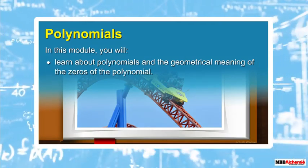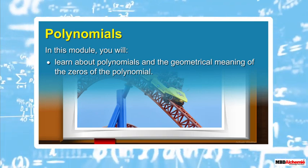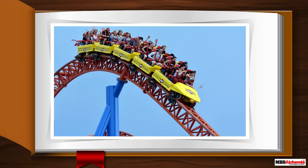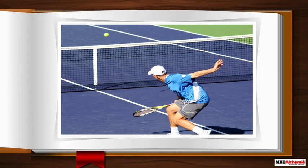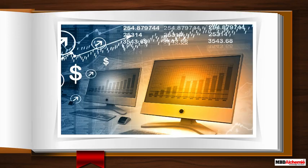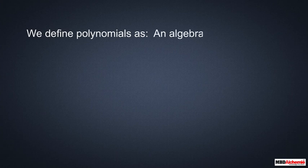In this module, you will learn about polynomials and the geometrical meaning of the zeros of a polynomial. Have you ever enjoyed a roller coaster ride? Polynomials are used to define the curves of various parts on which they move — the designing of a roller coaster is an application of polynomials. The path formed by a ball when a tennis player makes a shot is a parabola. Polynomials also enable people to describe the physical world, such as stock exchange variation graphs, where polynomials are used to compare data points on the curve to find the deflection of prices.